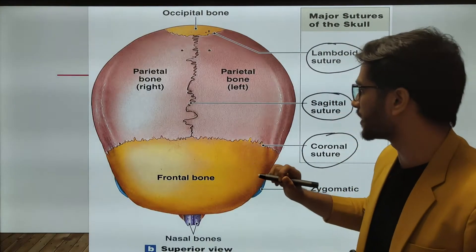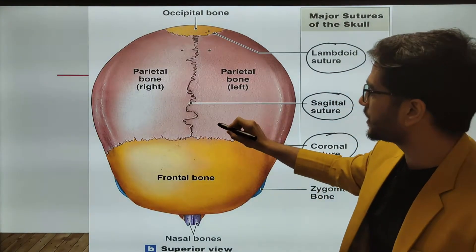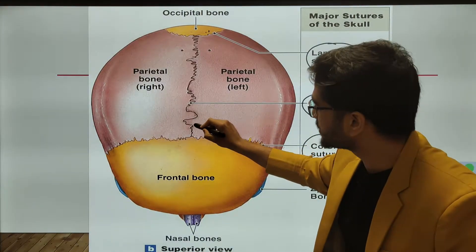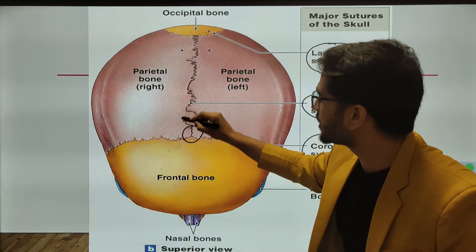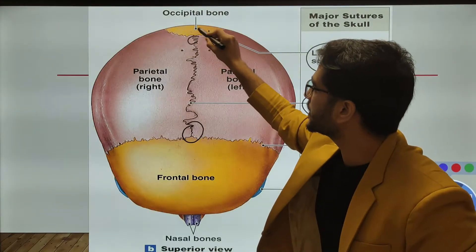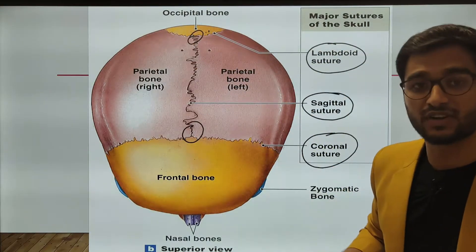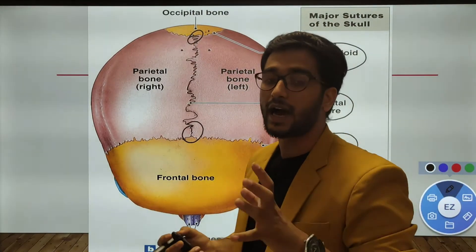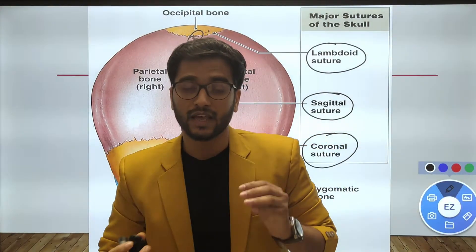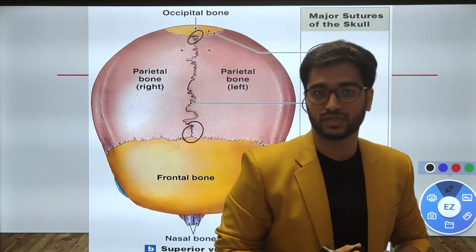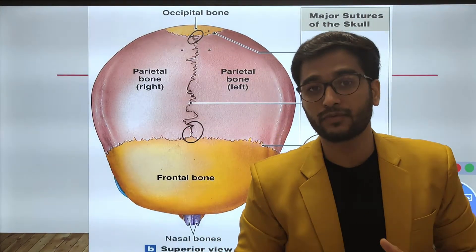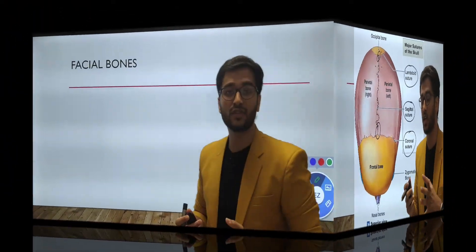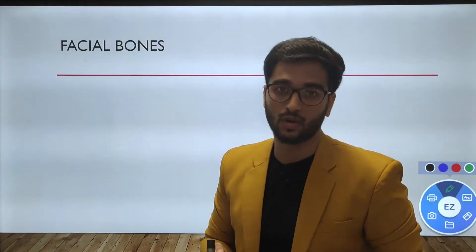Remember that in newborn babies there is the presence of fontanelles — anterior and posterior fontanelles. The fontanelles are spaces between the sutures which help the skull to grow. Let's look at the facial bones now.